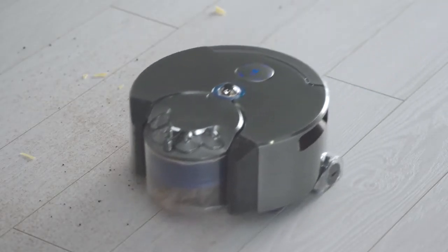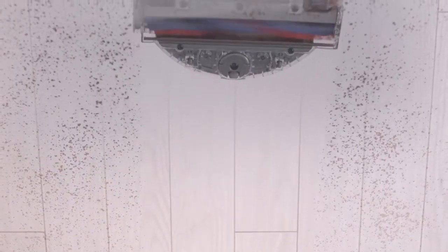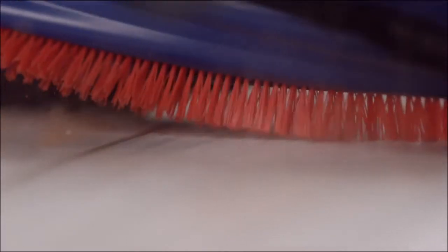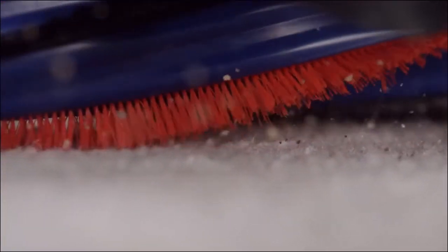The robot's cleaner head spans the full width of the machine. Carbon fiber filaments remove fine dust from hard floors, and stiff nylon bristles remove ground-in dirt from carpets.